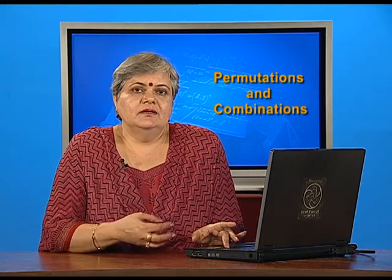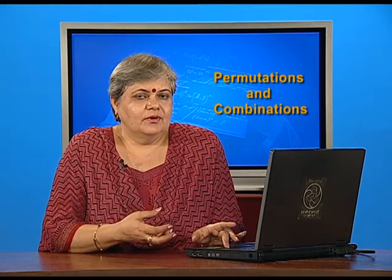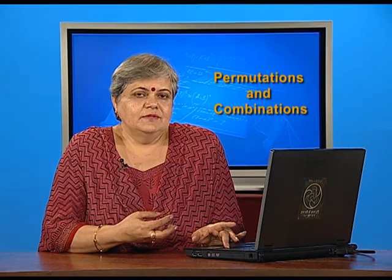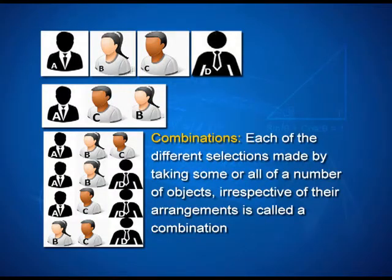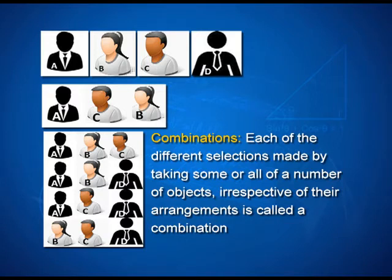The position, the order is not important. Who has been selected is of importance. We define combinations as the number of different selections that can be made by taking some or all of a number of objects, irrespective of their arrangements. What we are interested in is finding how many such combinations can be made.